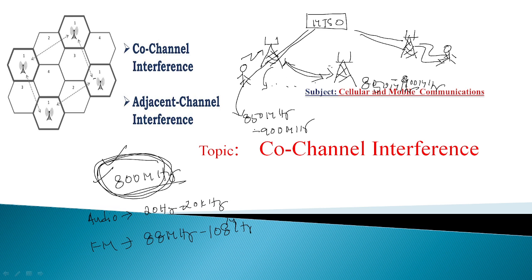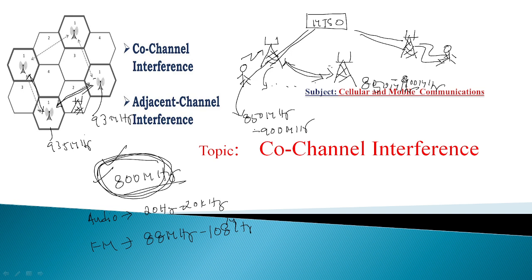You can see this in this figure. Here the same group of frequency is used, and in between there is one more cell site. The interference is due to the same group of frequency channel. Here also, they are using one more same group of frequency — just assume 93.5 MHz. This cell site is also using 93.5 MHz. Of course, after 800 MHz only, we use frequencies for mobile communication signal transmission. So this is co-channel interference.